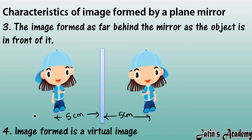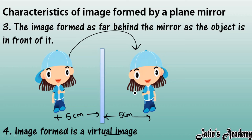Next, the image formed is a virtual image. Virtual images are those images which form behind the screen. In a plane mirror, the image always forms behind the mirror surface, and such images are known as virtual images.